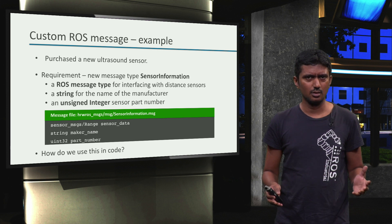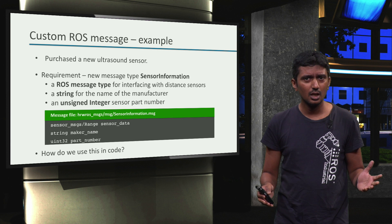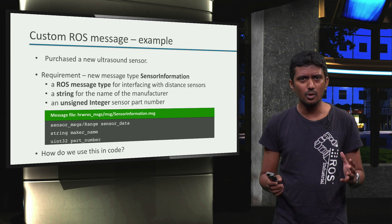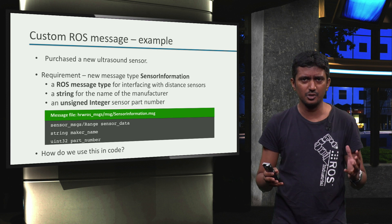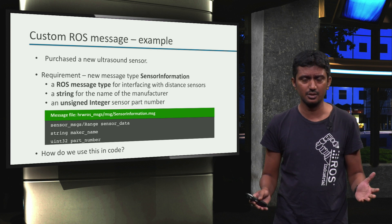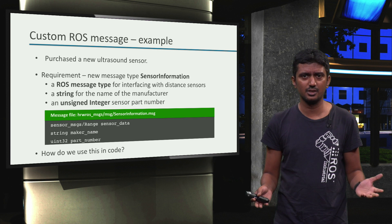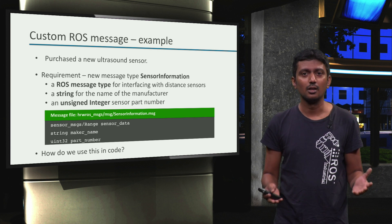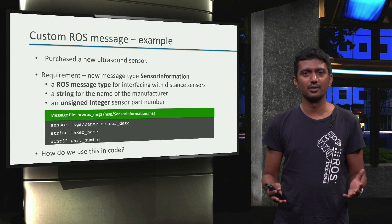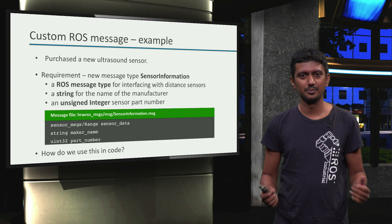Wait, what? How do we know what types of ROS messages are supported for sensors? What is in those message types? How do we use this in code? Let's find that out in the next video.